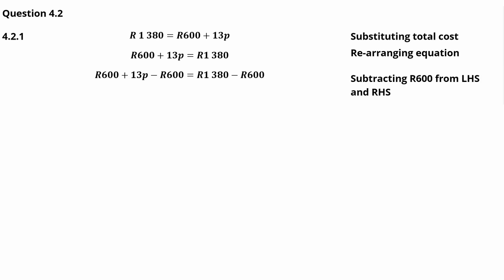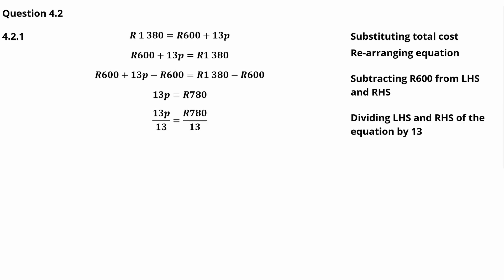Subtracting 600 rand from both sides gives us 13p equals 780 rand. Dividing both sides by 13 gives us 13p divided by 13 equals 780 rand divided by 13, and this gives us p equals 60.